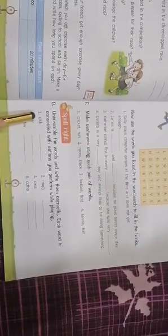Spell right: unscramble the words and write them correctly. Each word is connected with action you perform while playing. The words are: kick, run, jump, race, throw, catch.